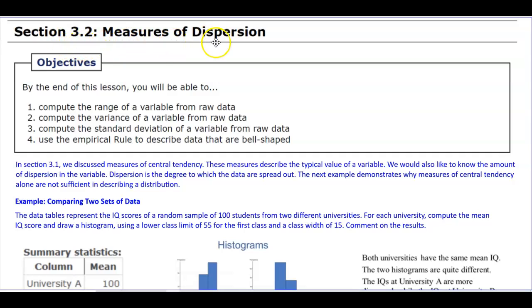Section 3.2, Measures of Dispersion. For the objectives of this section, we want to compute the range of a variable from raw data, compute the variance of a variable from raw data, compute the standard deviation of a variable from raw data, and use the empirical rule to describe the data that are bell-shaped.